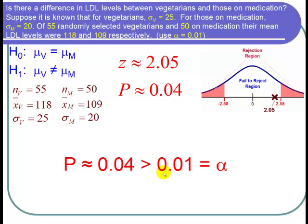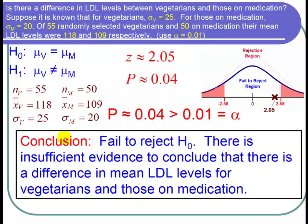So now I'm ready to state my conclusion. We can conclude that we fail to reject H0, and there is insufficient evidence to conclude that there is a difference between mean LDL levels for vegetarians and those on medication. And I'm done with the problem. Thank you so much.